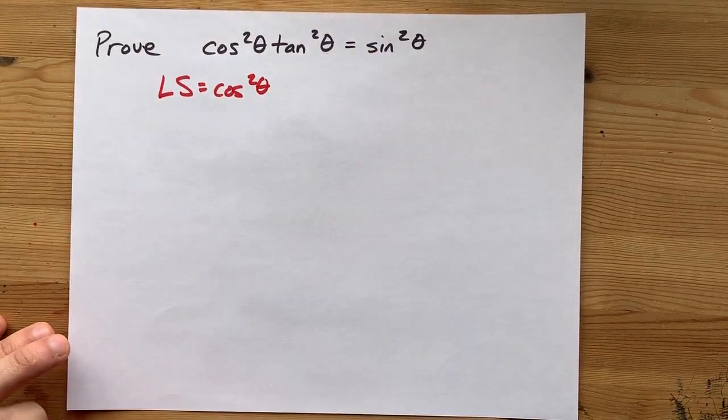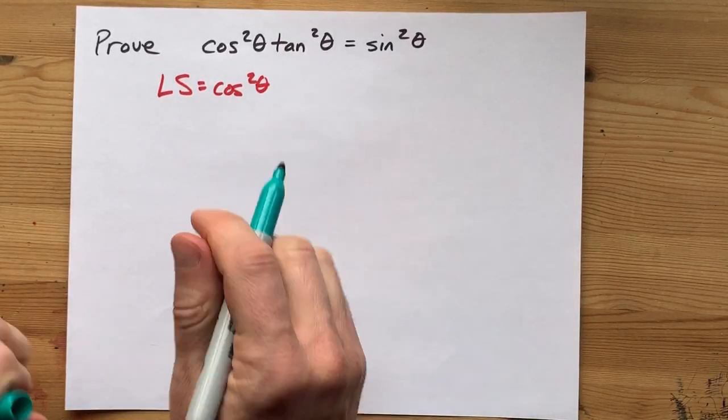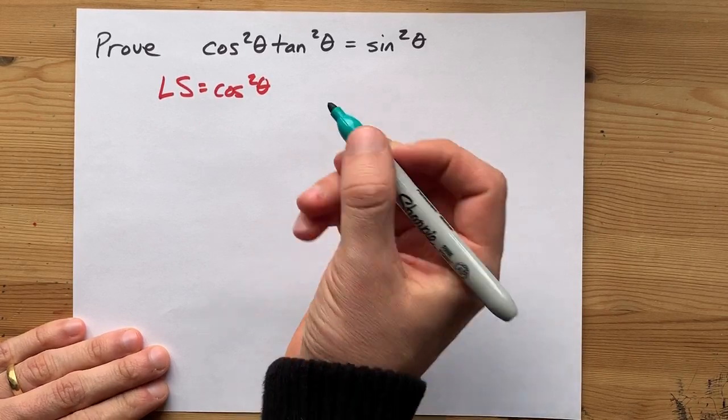Tan squared is the same as sine squared over cos squared. Let me put that another way. Because tan is sine over cos, that's the quotient identity.